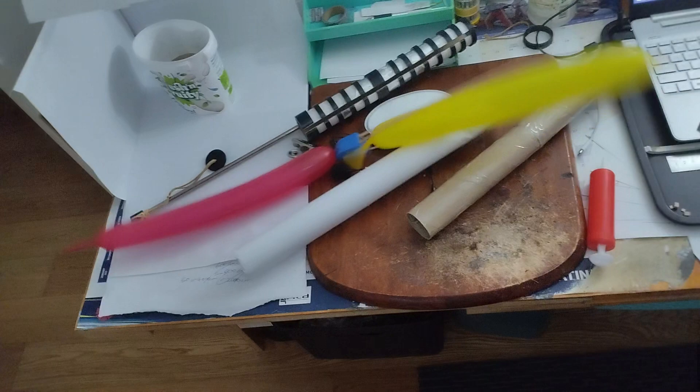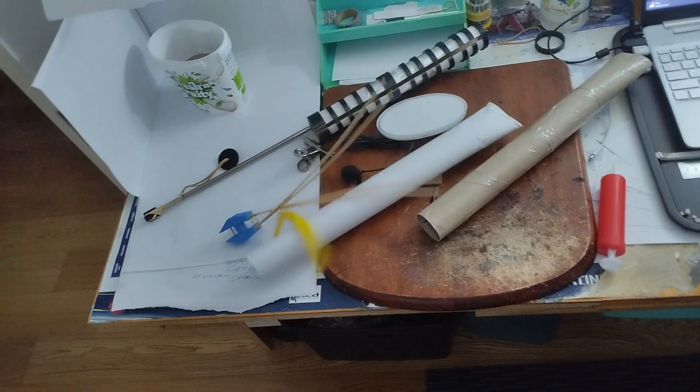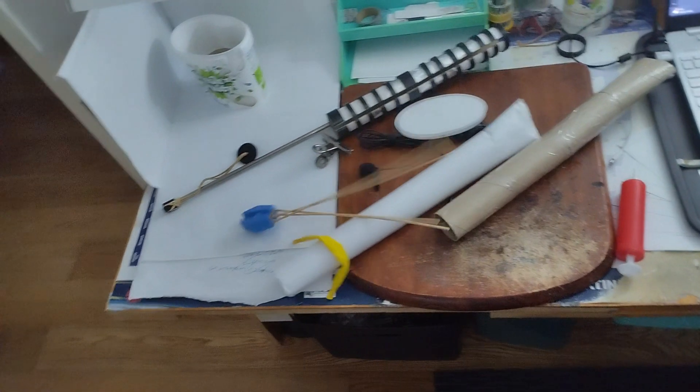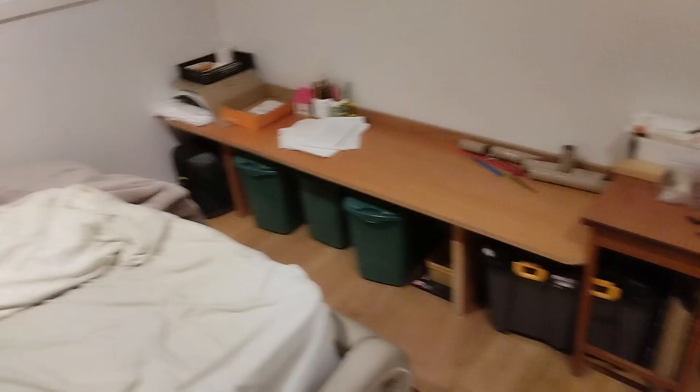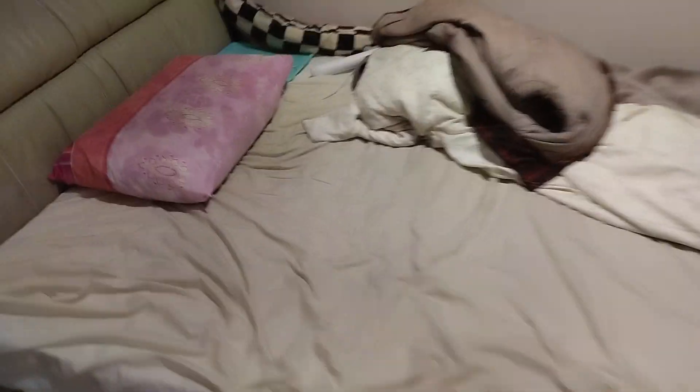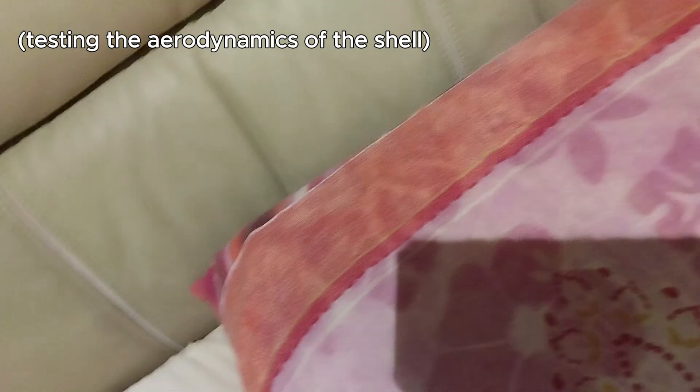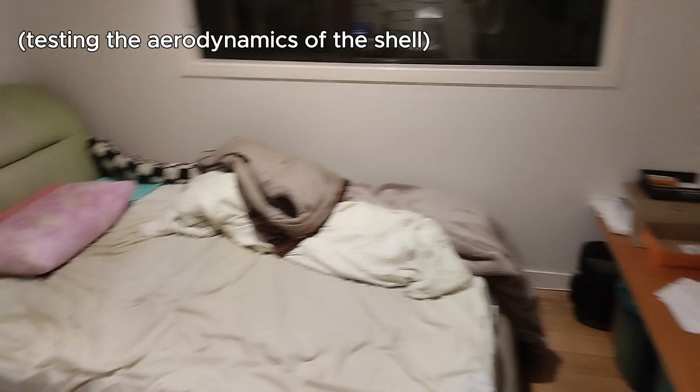Now, with the two-stage mechanism test going very well, surprisingly, for a first test, and the mechanism being very self-explanatory, honestly, I think we can move on very quickly. And in this video, with the mechanics of the rocket, I would say, done, it was time to move on to the shell of the rocket to make it actually look like somewhat of a rocket.